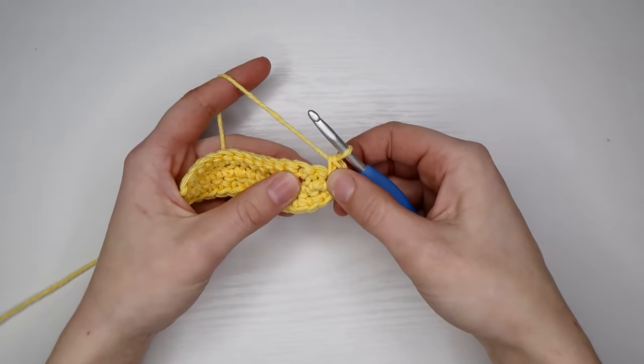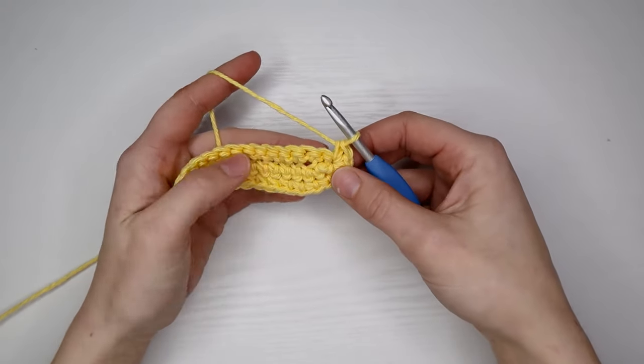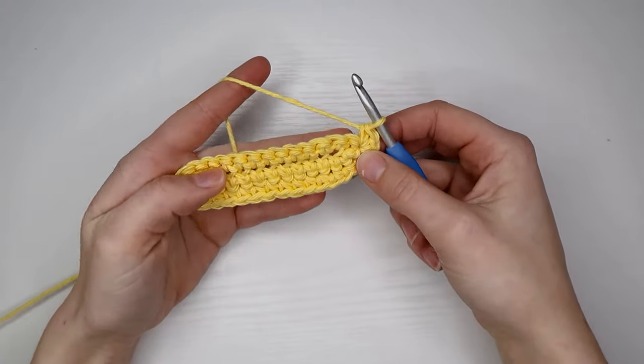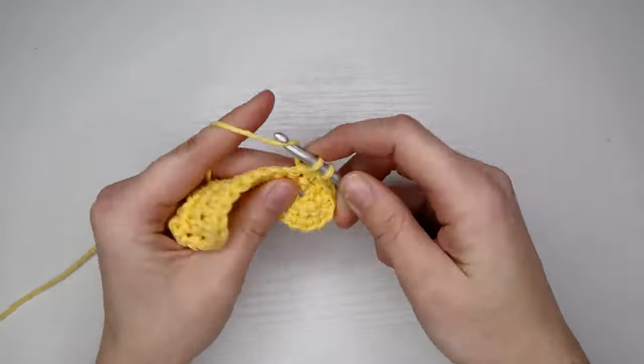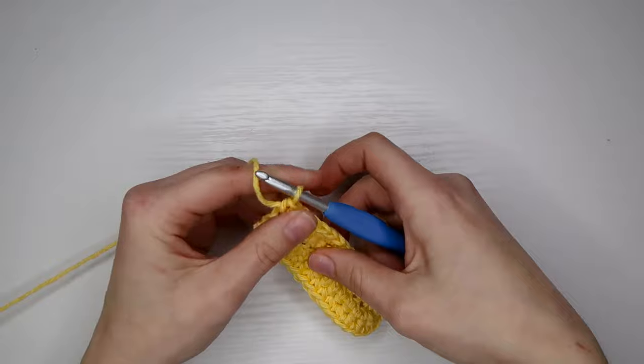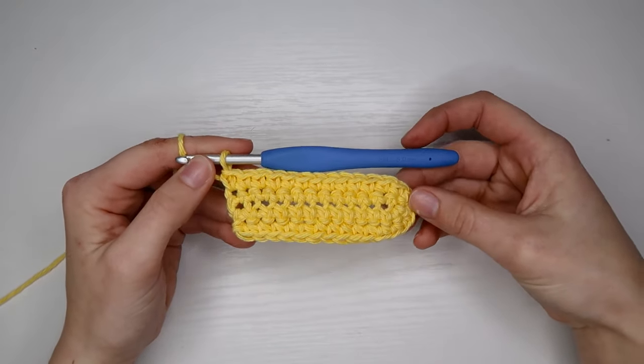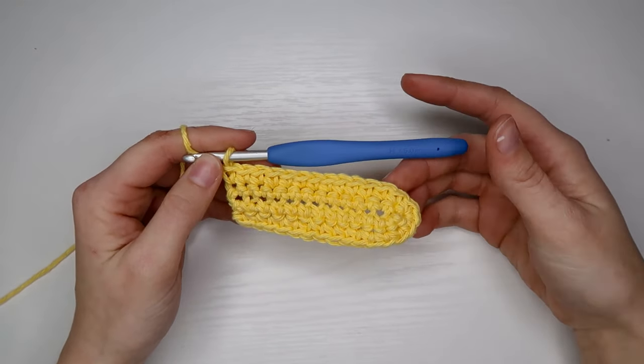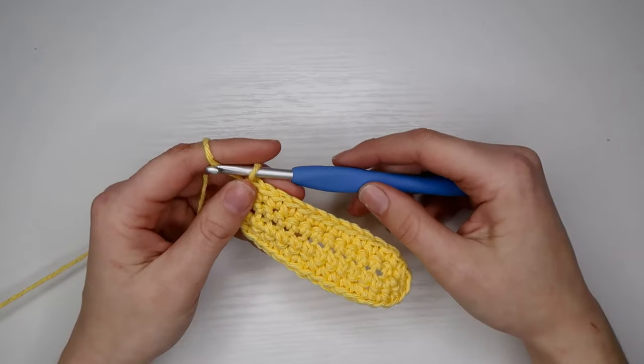After I do those three single crochets in the top stitch, I'm just going to continue with the single crochets down the other side. I made it all the way back to the bottom and that is pretty much it for this pattern. We're just going to be repeating that over and over and over again.